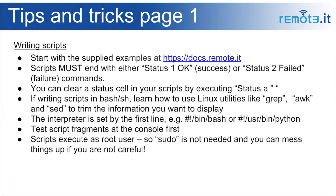Here are some tips and tricks for writing scripts. Please start with the supplied examples. You must terminate your script with a `status 1` (success) or `status 2` (failed) command — otherwise the job will stay in the running state. You can clear a status cell in your scripts by executing, for example, `status A ''` — two single quotes — which passes a null string and clears the cell. If you're writing scripts in Bash or C shell, learn to use Linux utilities like grep, awk, and sed to trim down the information you want to display.